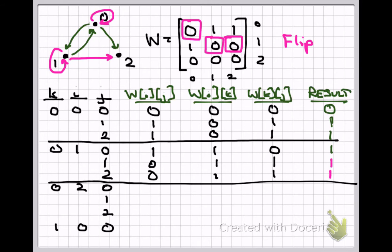That completes another iteration of the innermost loop. Now we keep k at 0 and increment i to 2, looping through j again. This time not much happens — with i fixed at 2 we're looking at the bottom row, which is all 0s. So w[i][k] = w[2][0] = 0 for all j, and AND-ing with 0 the whole way gives nothing but 0s as results.